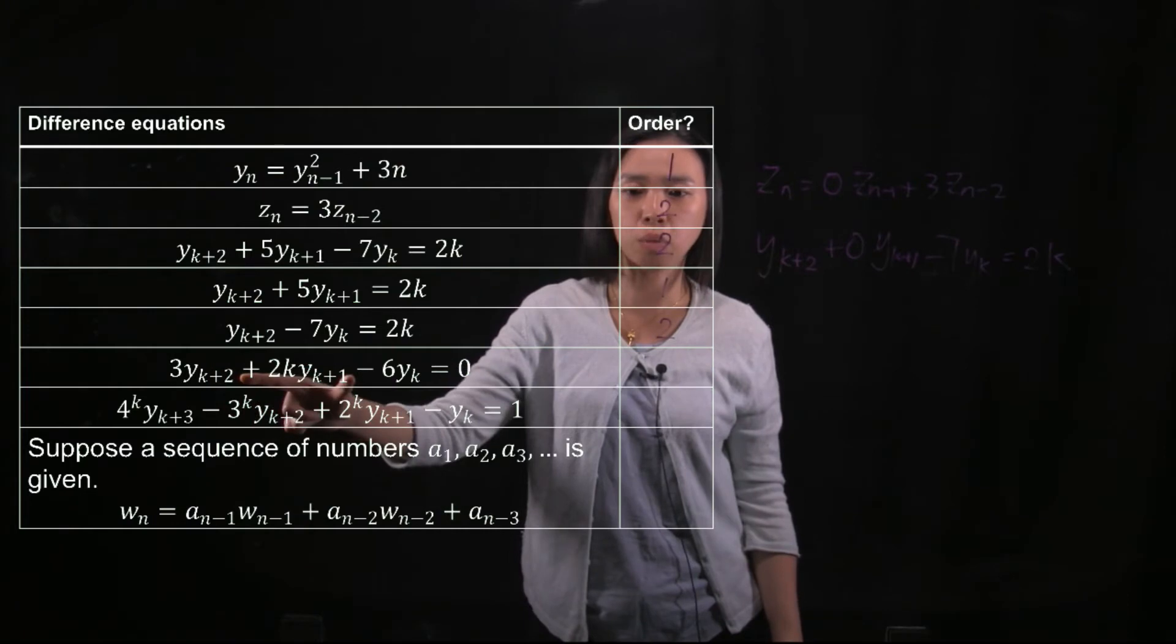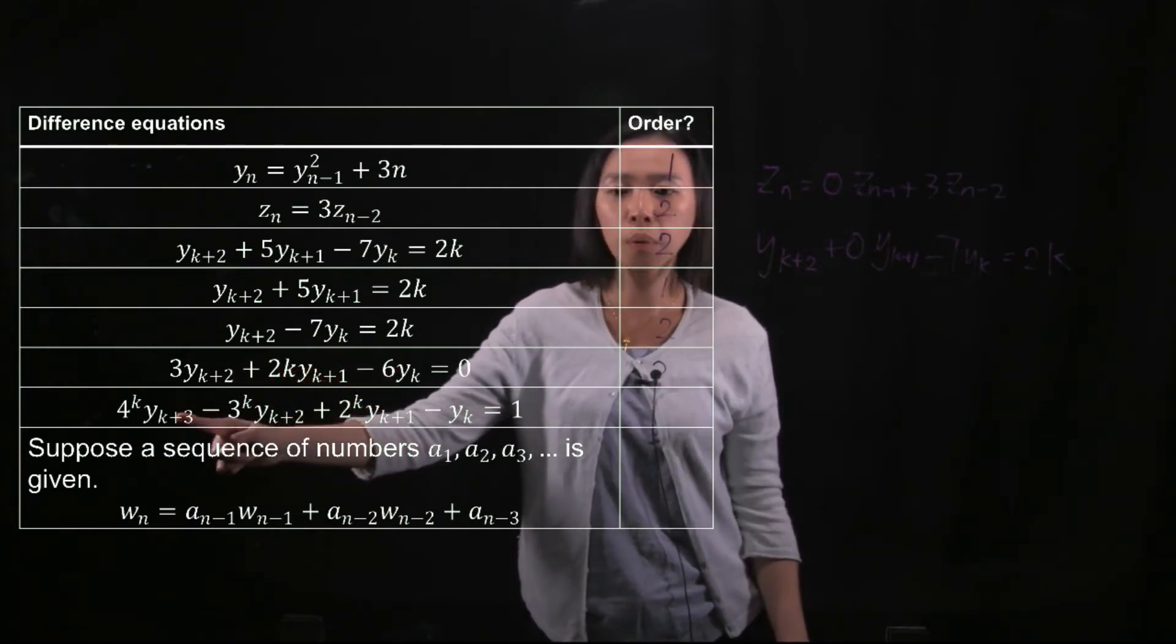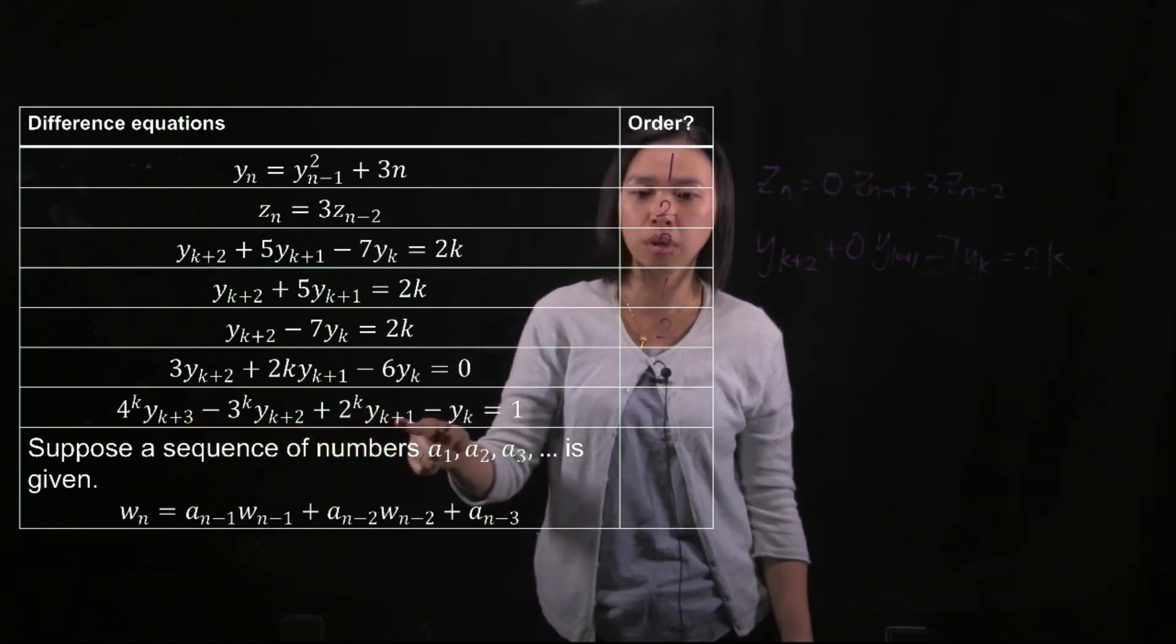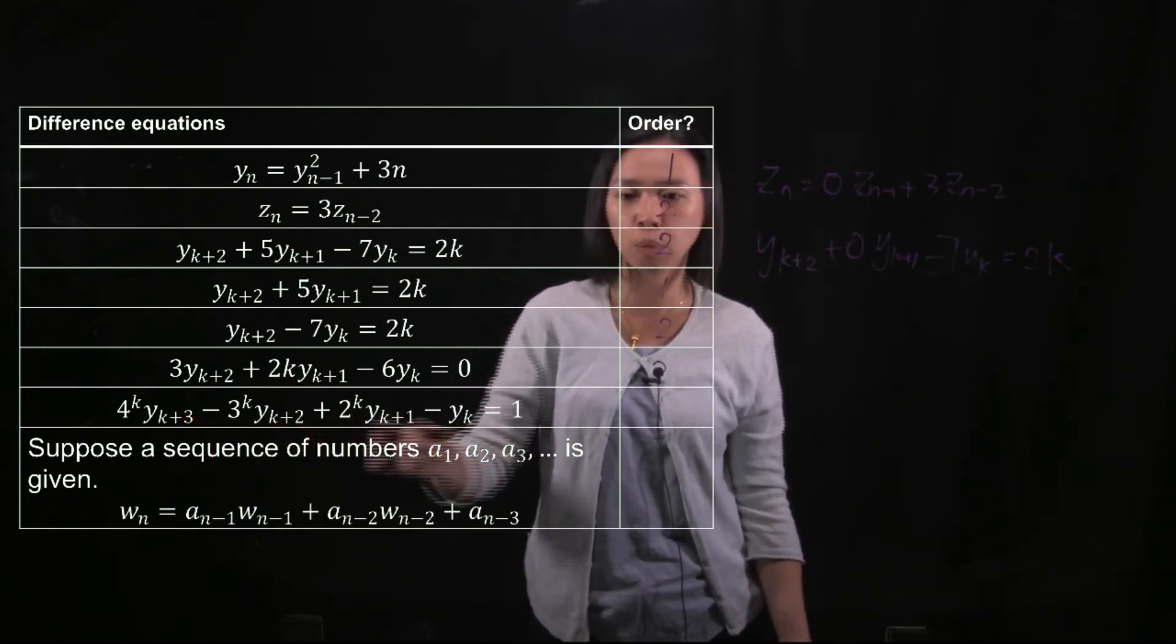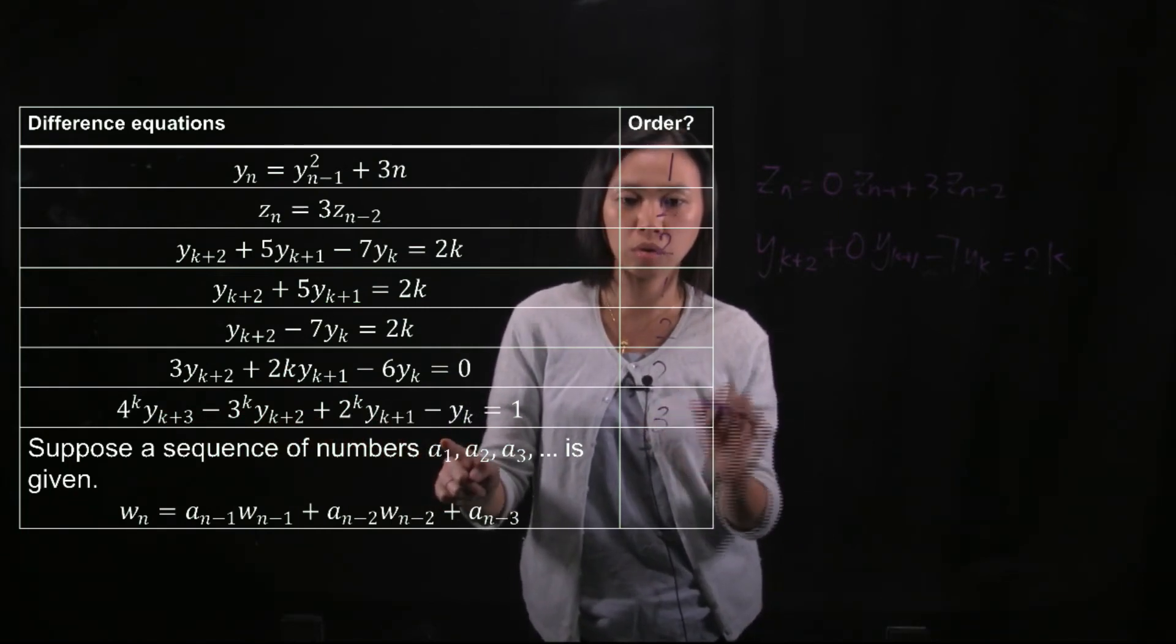yk plus 2 depends on yk plus 1 depends on yk. So it depends on the previous two terms. yk plus 3 depends on yk plus 2 depends on yk plus 1 depends on yk. So this term depends on the previous three terms. So the order is 3.